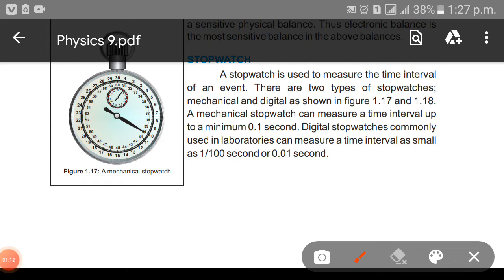A stopwatch is used to measure the time interval of an event. There are two types of stopwatches: mechanical and digital, as shown in figures 1.17 and 1.18. A mechanical stopwatch can measure a time interval up to a minimum of 0.1 seconds. Digital stopwatches commonly used in laboratories can measure a time interval as small as 1/100 seconds or 0.01 seconds. The digital stopwatch has much more accuracy.